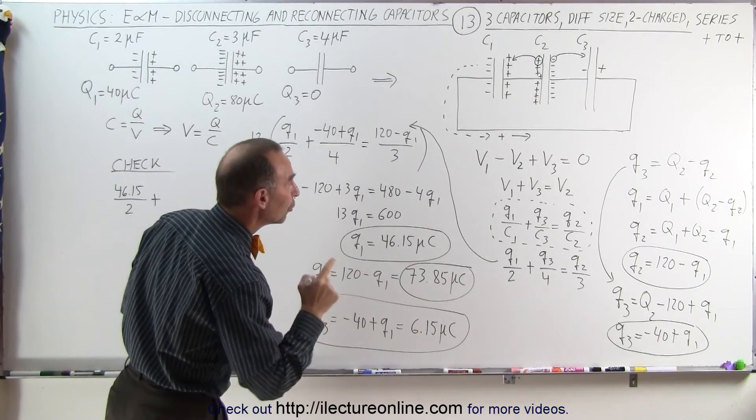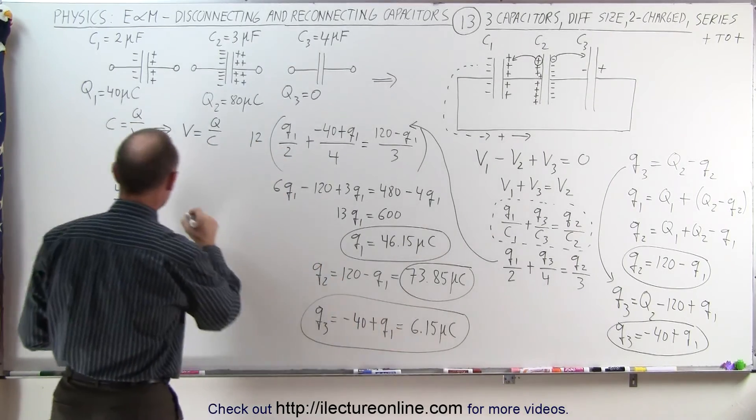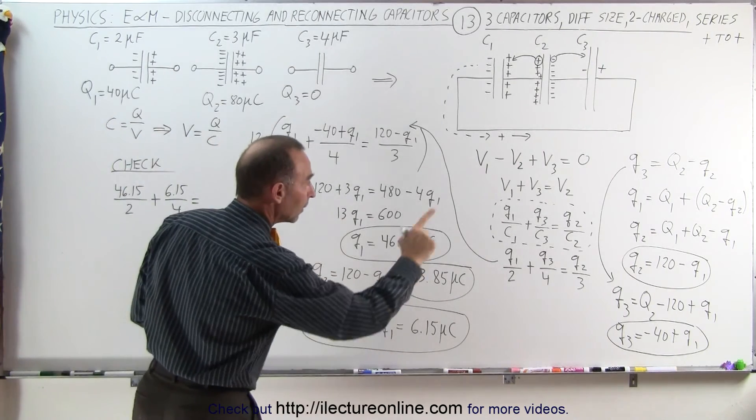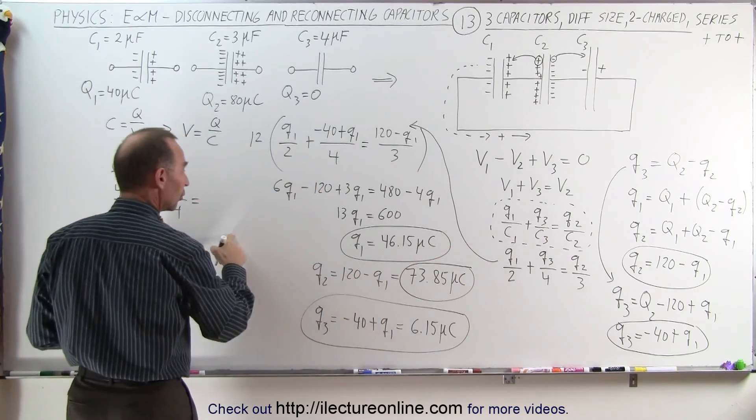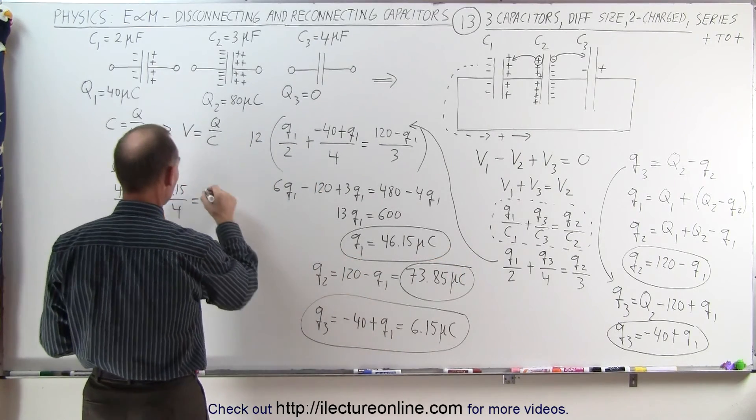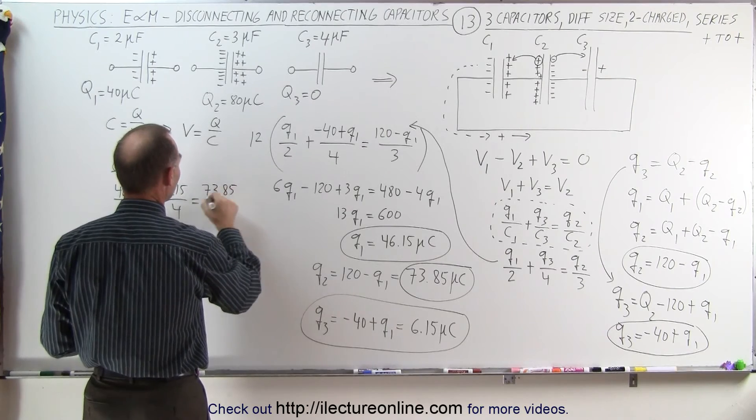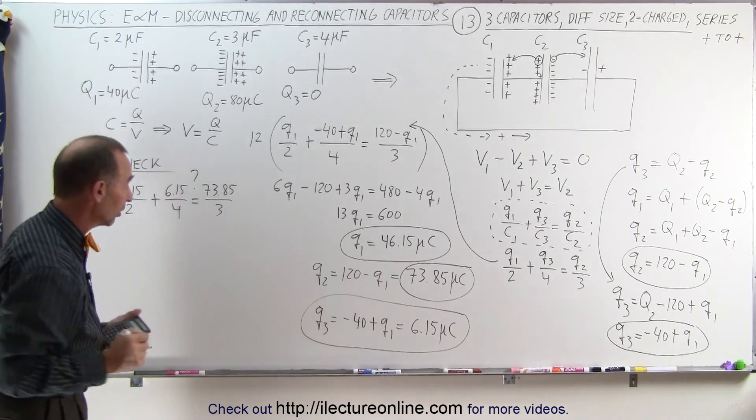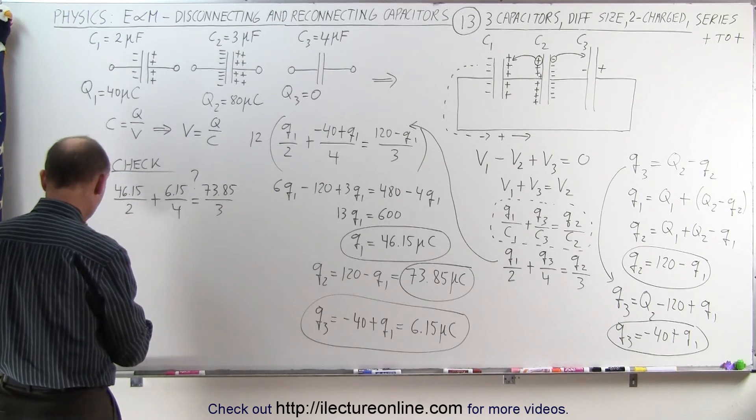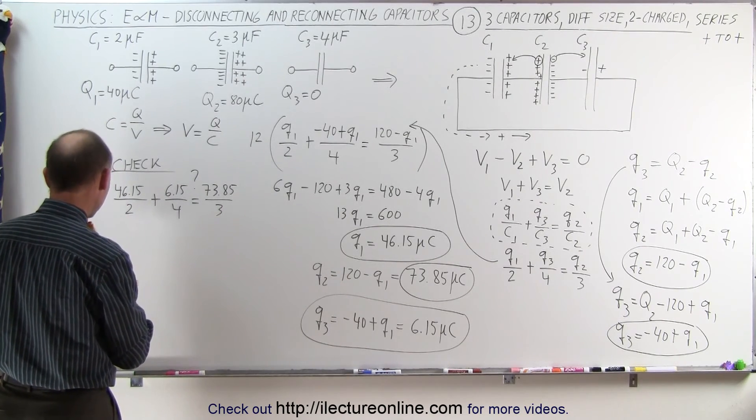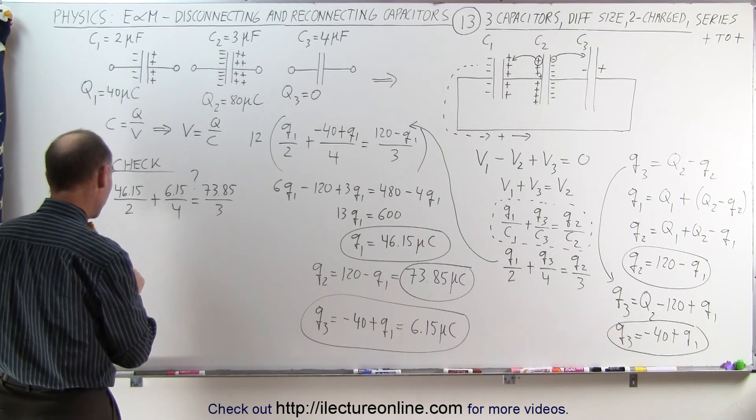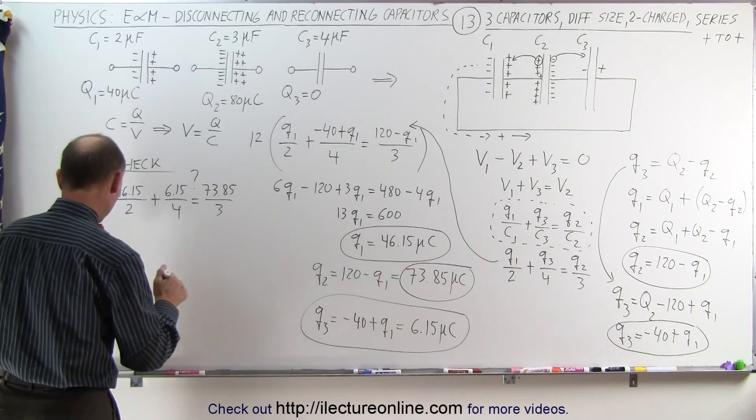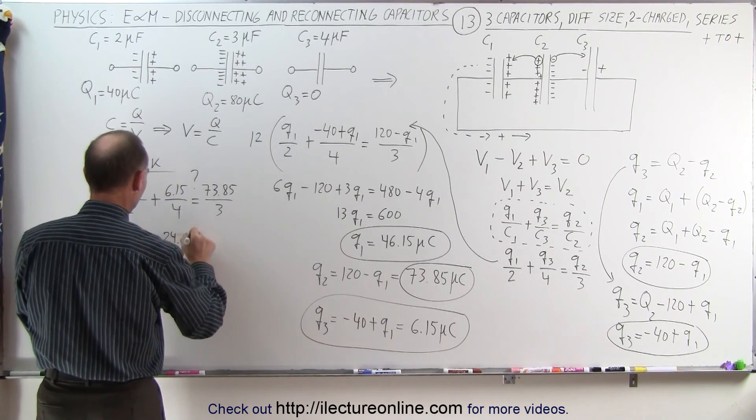Plus we have Q3 divided by C3, that would be 6.15 divided by 4, should equal Q2 divided by 3. And Q2 is right here 73.85 divided by 3. So let's see if this is indeed equal to each other. So looking at the left side, we have 46.15 divided by 2 plus 6.15 divided by 4 equals, on the left side, we get 24.61.